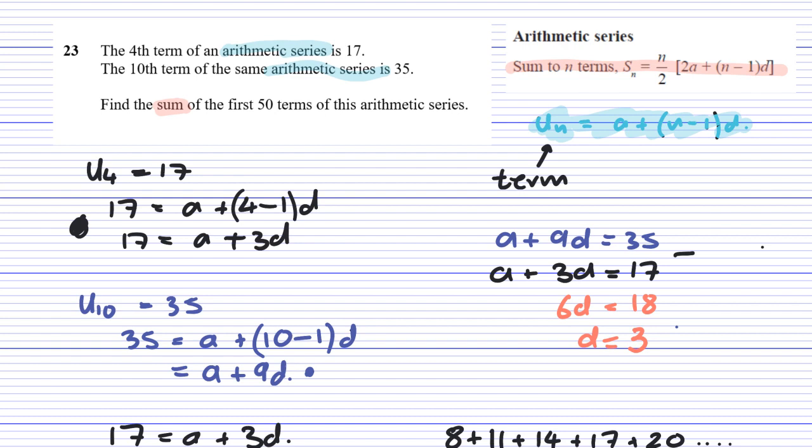Which is the formula given to us in the front of the textbook, front of the exam book, the sum of N terms. Okay, we have all the information we need now. We know what N is. We know that N is going to be 50.